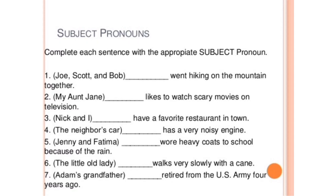Now we're going to number four: The neighbor's car. The neighbor artinya tetangga — orang yang tinggal di sekitar kita. Neighbor's — huruf S menunjukkan kepunyaan. Car-nya tidak ada akhiran S, berarti car-nya hanya ada satu. The neighbor's car has a very noisy engine. Kata ganti untuk car — kata benda — ataupun hewan, kita gunakan It. Sehingga kalimatnya menjadi: It has a very noisy engine.